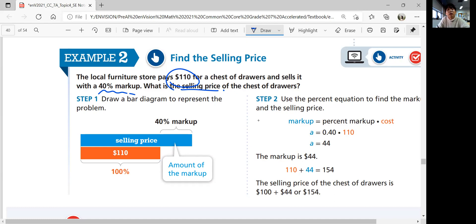Step one, draw a bar diagram. See which one's the whole, which one's the markup. The selling price you don't know, but you know it's a 40% markup. 100% is your original price, $110. Markup equals percent markup times cost. The markup you're trying to get, so put a variable, and then percent markup, 40% equals 0.4. You times it by 110, you get 44. The markup is $44. 110 plus 44 equals 154. The selling price should be $154.